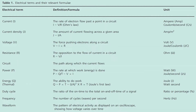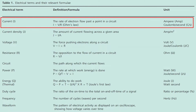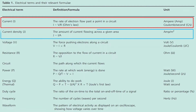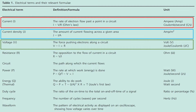This table presents electrical terms and their relevant formulas. Current is the rate of electron flow past a point in a circuit; formula: I = V/R; unit: ampere. Current density is the amount of current flowing across a given area; formula: J = I/A; unit: ampere per meter squared. Voltage is the force pushing electrons along a circuit; formula: V = I × R; unit: volt or joule per coulomb.